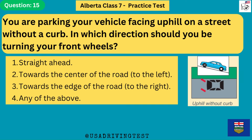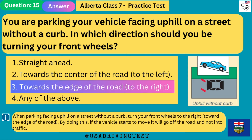You are parking your vehicle facing uphill on a street without a curb. In which direction should you be turning your front wheels? 1. Straight ahead. 2. Towards the center of the road, to the left. 3. Towards the edge of the road, to the right. The answer is 3: towards the edge of the road, to the right. When parking facing uphill on a street without a curb, turn your front wheels to the right toward the edge of the road. By doing this, if the vehicle starts to move it will go off the road and not into traffic.